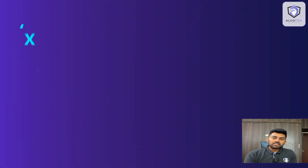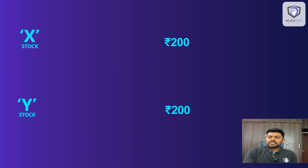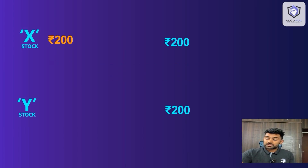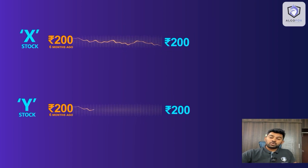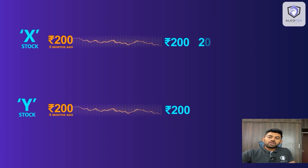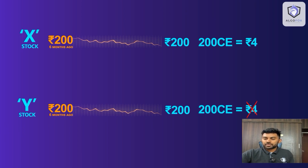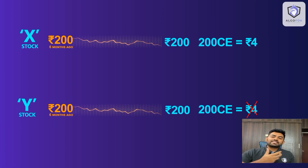Let us say today the price of stock X is 200 rupees and today the price of stock Y is also 200 rupees. Let us go 6 months into the past — 6 months ago the price was 200 rupees for X and also 200 rupees for Y. So both stocks were at 200 rupees six months ago and are also at 200 rupees today. The answer to why their option premiums differ lies in how each stock has traveled over these last 6 months. While I am taking 6 months as an example, usually when determining option prices we take the last 1 year's movement into consideration.